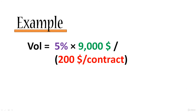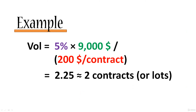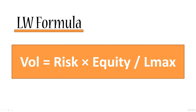For now we'll say that risk is going to be 5%. Performing the calculation gives us approximately 2.25, which means about 2 contracts or lots if you're trading on the forex market. So now we know the volume to specify when entering our next transaction — that's what the Larry Williams method helps you understand. From this formula, you can see that the volume depends on equity, exactly as we discussed in the previous tutorial.